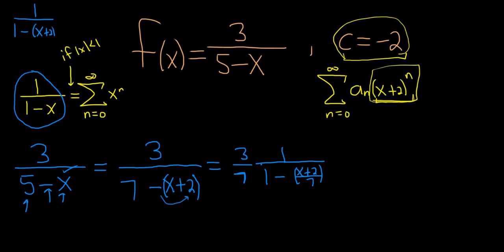At this point, we've reached a point where we can actually use our formula. So we can use our formula on this piece here, which I've circled in purple. So this is equal to 3 7ths, infinite sum, n runs from 0 to infinity.